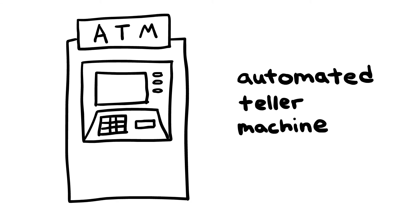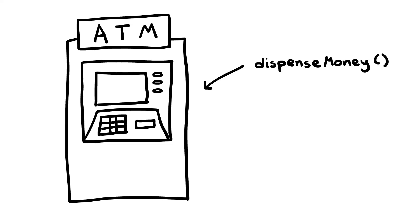To show you what I mean, consider an ATM. There's probably a function somewhere in the ATM code that dispenses money, since that's one of its core jobs.